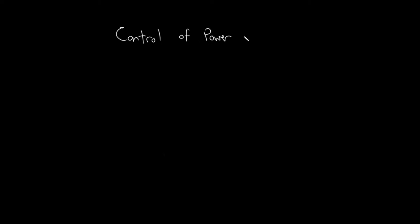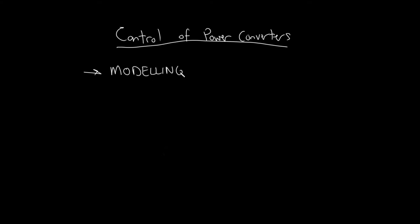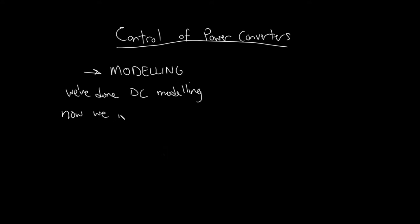So, talking about control and power converters, we need modeling. For losses and such, we've already done DC modeling before. But now we have to do something different — we have to do what's called small-signal modeling. Where DC modeling could be considered large-signal modeling, small-signal modeling is really looking at how the converter reacts to small changes in input signals.